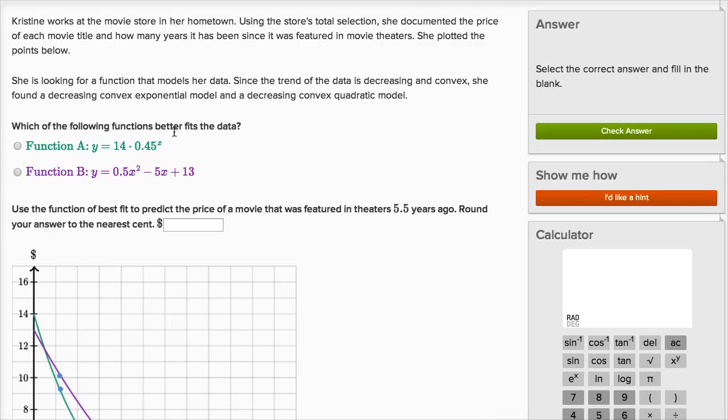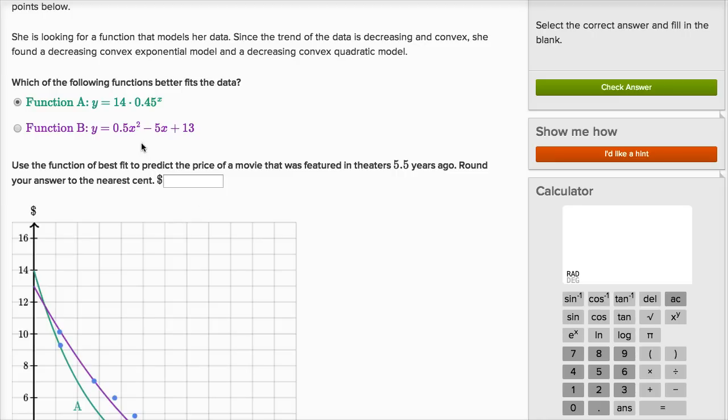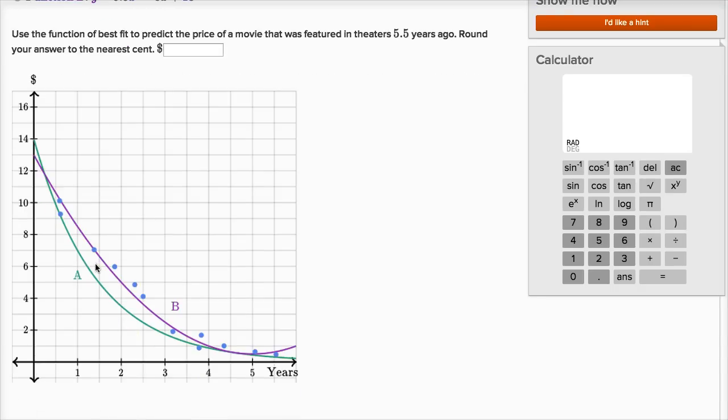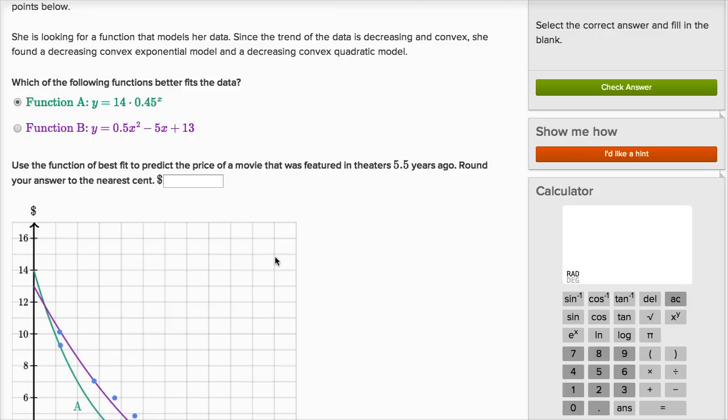So which of the following functions better fits the data? Function A, this is an exponential. This is the one in green right over here. And function B, this one right over here is a quadratic. And you can see this one in purple. So which one of those better fits the data?